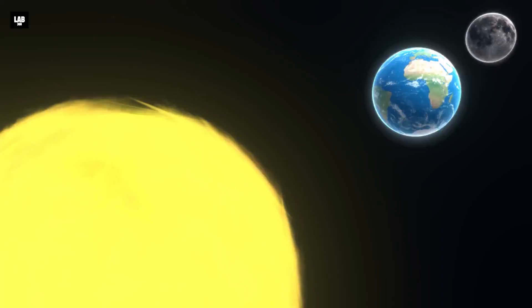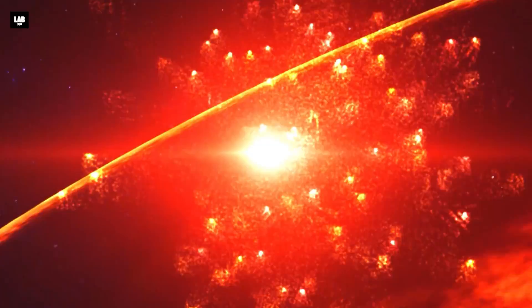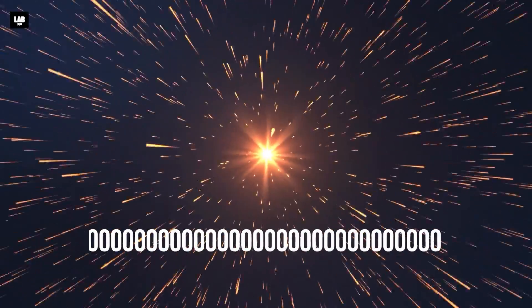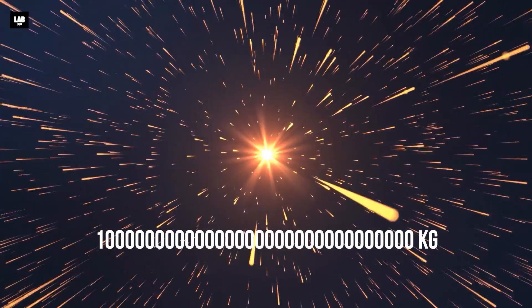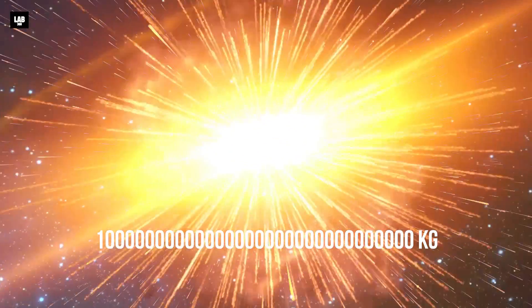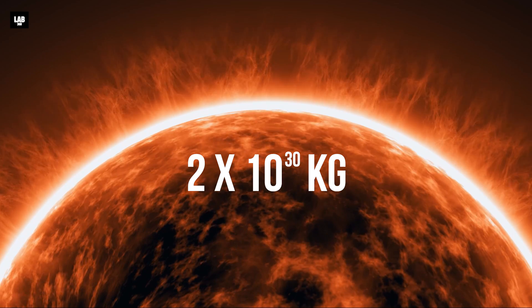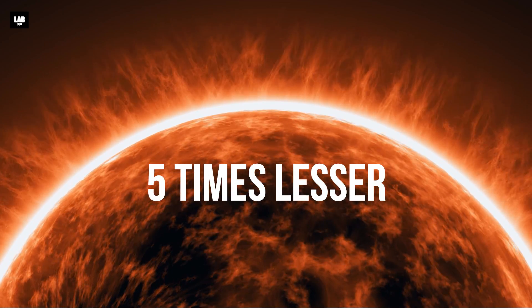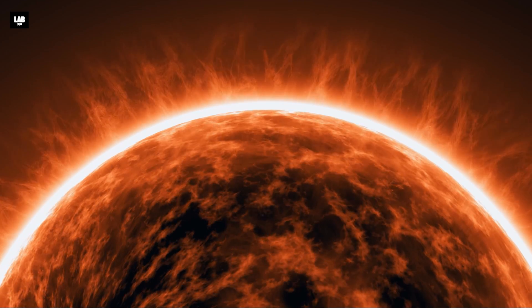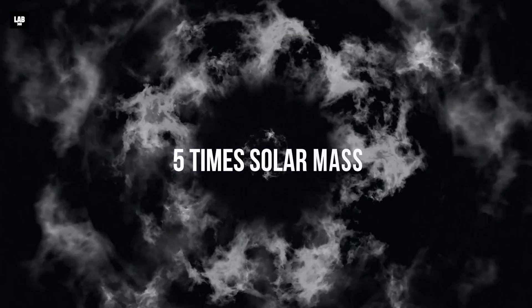But now let's come to the main factor which decides whether a star can end its life by exploding in a supernova. As mentioned before, only stars having a mass of at least 10^31 kilograms can explode in a supernova. Now, the sun's mass is 2×10^30 kilograms, which is 5 times lesser than that needed for a star to die as a supernova. Essentially, what it means is that only stars with a mass 5 times that of our sun can die as a supernova.